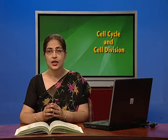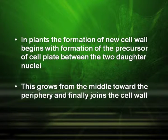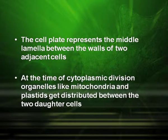In plants, the formation of a new cell wall begins with the formation of the precursor of the cell plate between the two daughter nuclei. This grows from the middle towards the periphery and finally joins the cell wall. The cell plate represents the middle lamella between the walls of two adjacent cells. At the time of cytoplasmic division, organelles like mitochondria and plastids get distributed between the two daughter cells.